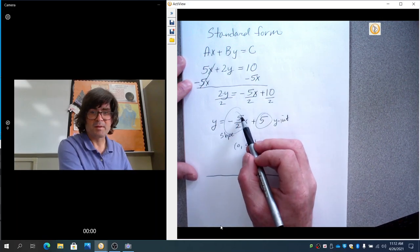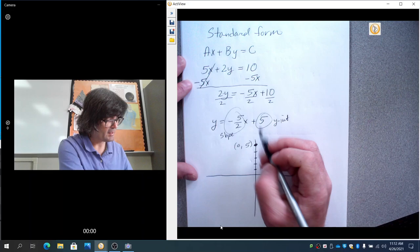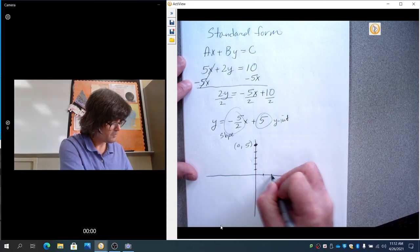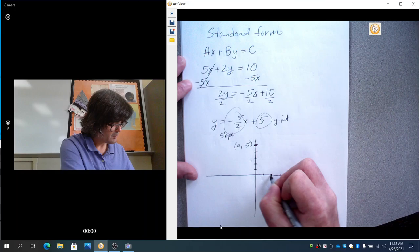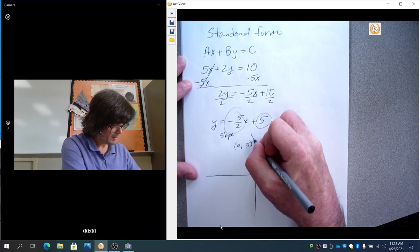So, with my slope, I'm going to go down 5, right 2. So, down 1, 2, 3, 4, 5, right 1, 2. And my line is going to look like this.